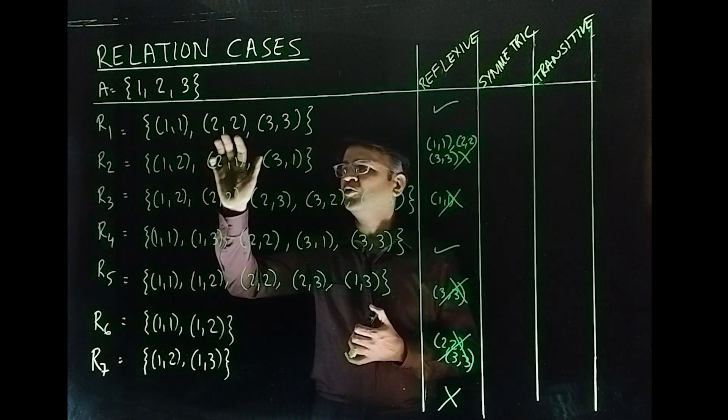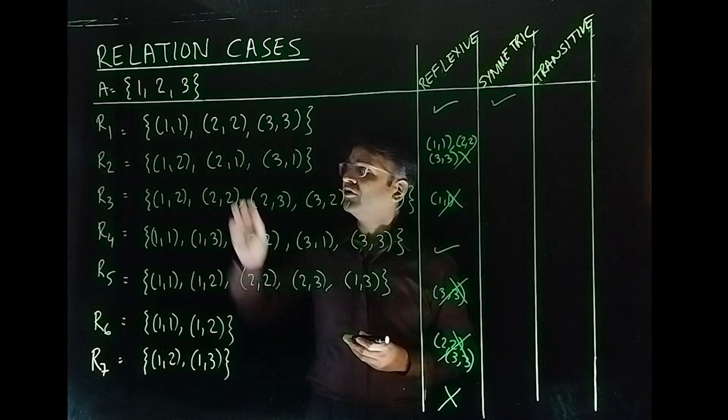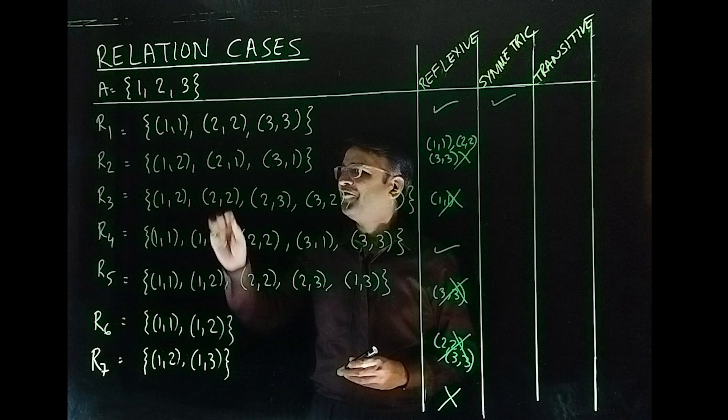Let's see. So, (1,1), (2,2), (3,3) is symmetric as well. How? Because the reflection of (1,1) has to be (1,1).